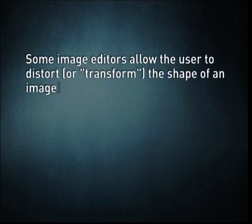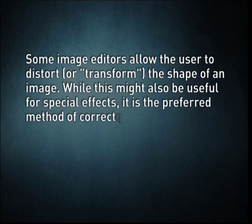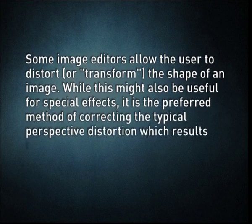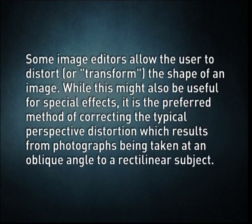Some image editors allow the user to distort or transform the shape of an image. While useful for special effects, it is the preferred method of correcting typical perspective distortion which results from photographs taken at an oblique angle to a rectilinear subject. Care is needed as the image is reprocessed using interpolation of adjacent pixels, which may reduce overall image definition. The effect mimics the use of a perspective control lens, which achieves similar correction in-camera without loss of definition.